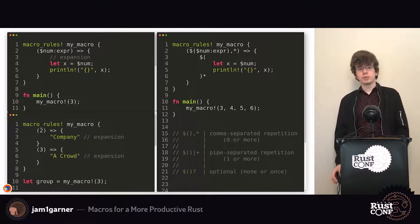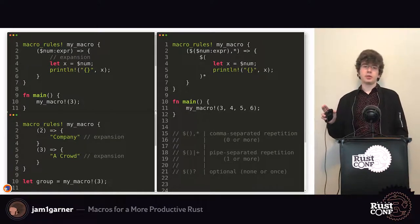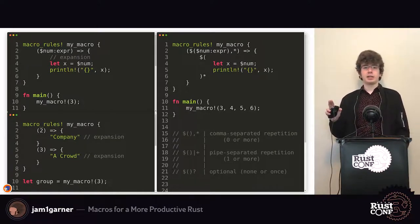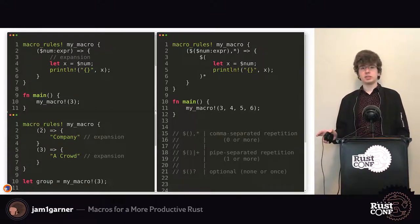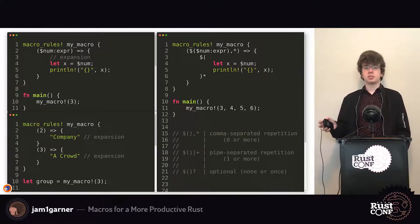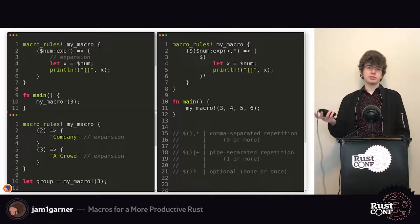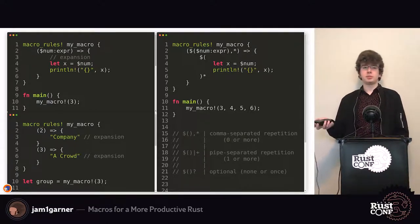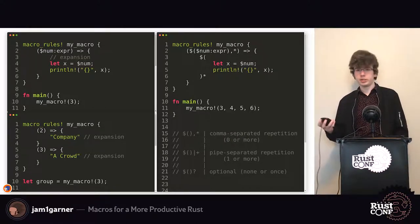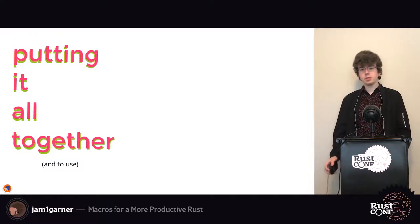Another big feature of macro_rules macros is that you can have multiple different patterns you're matching against, and each pattern can have a different expansion. That allows you to encode parsing logic to figure out how you want to handle your expansion. In this case it's just a simple macro which expands differently based on whether you pass a 2 or a 3 into it.